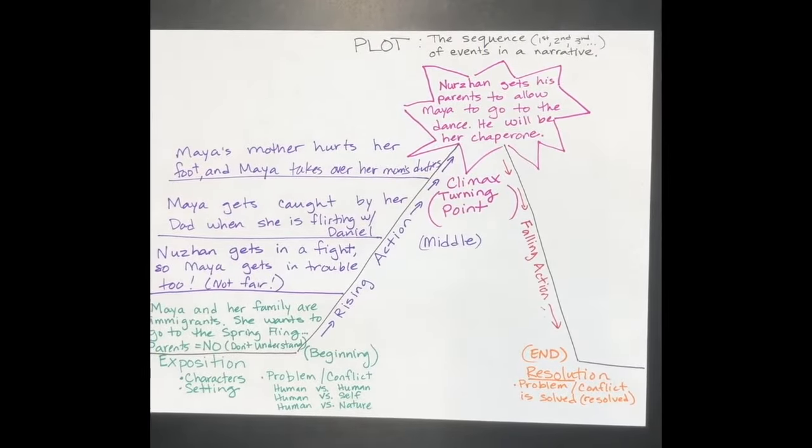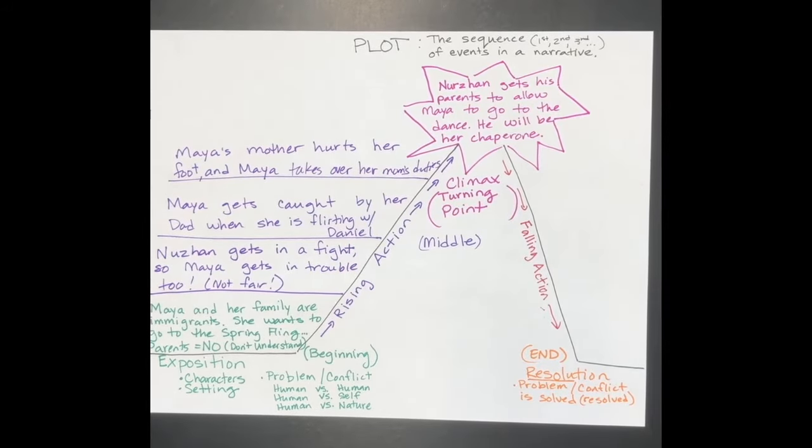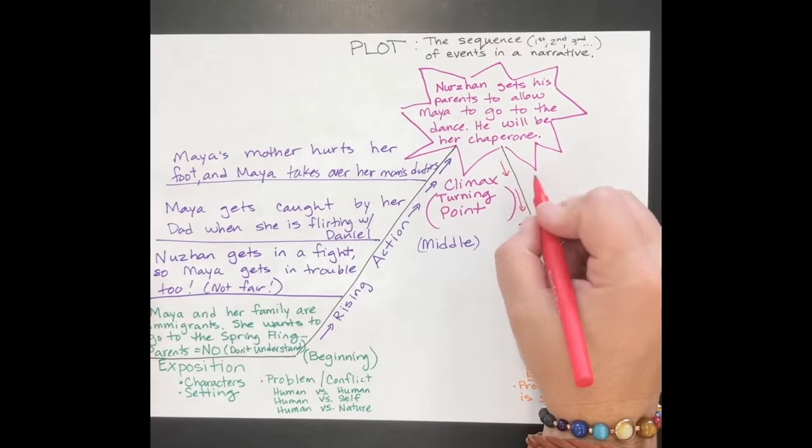Then Nershon convinces his parents to let her go to the dance. So what are some of those elements that are falling action?